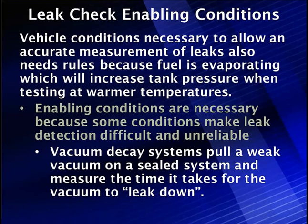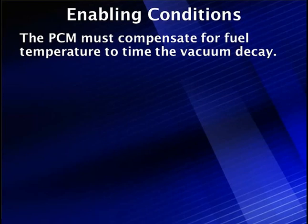The vacuum decay system — pulling a weak vacuum on a sealed system and measuring the time it takes for the vacuum to leak down — is typical of early systems, used from 1996 to 1999 and still used today. But this requires we know how much fuel is being evaporated, and we have to compensate for fuel temperature and change the time required for vacuum decay. Warm fuel will have a much shorter measurement window than cold fuel because we know the fuel is adding to it.